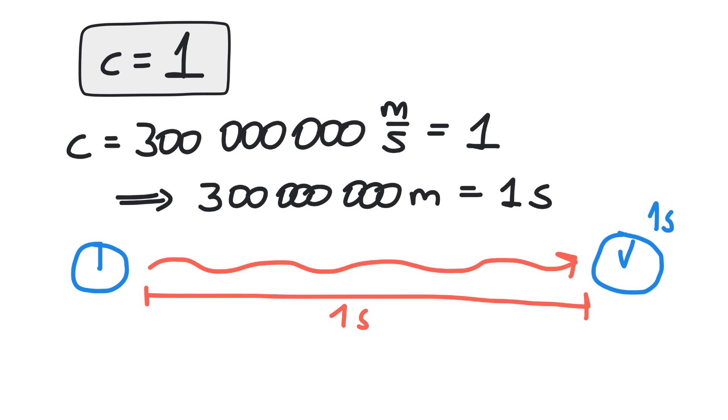Setting c equals 1 also gives us a scale for velocities. Velocities now do not carry units anymore. They are implicitly given in units of the speed of light. A velocity of 0.4 means 0.4 times c.